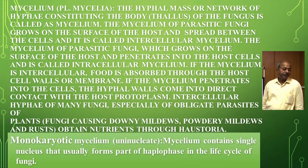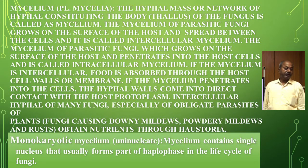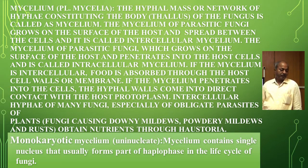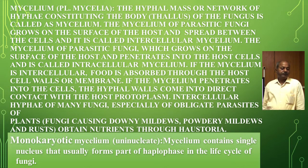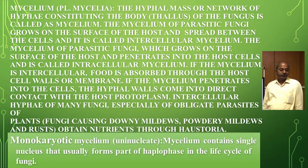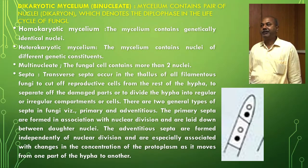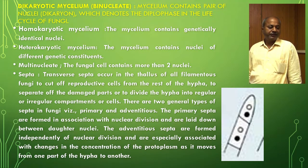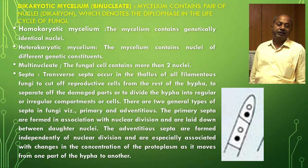If the mycelium is intercellular, food is absorbed through the host cell wall or membrane. The intercellular hyphae of many fungi, especially obligate parasites like downy mildew, powdery mildew and rust, obtain nutrients through haustoria. Mycelium may be monokaryotic, containing a single nucleus, which forms part of the haplophase in the life cycle, or dikaryotic, involving two nuclei of opposite mating strains.